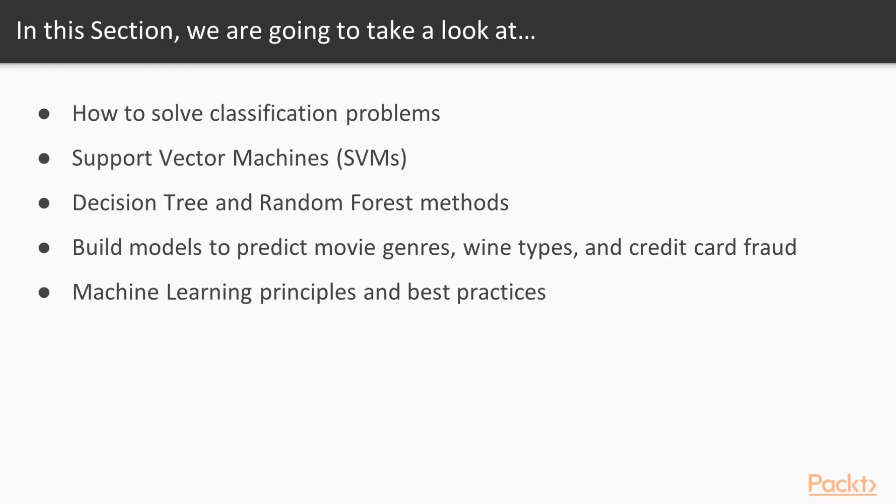In this section, we're going to take a look at how to solve classification problems. We're going to learn about SVMs, Decision Trees, and Random Forest Methods, and we're going to use these models to predict things like movie genres, wine types, and credit card fraud. And as always, we'll be covering best machine learning principles and practices throughout each of these.